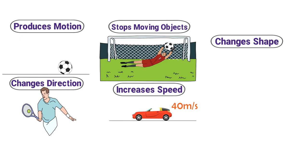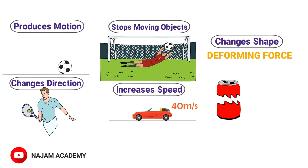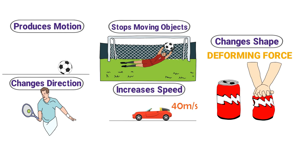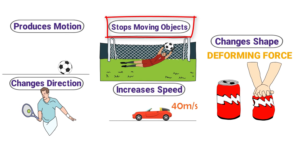Fifthly, force changes the shape of an object, which we also call a deforming force. For example, consider an empty can — you exert force on the can, and due to your force its shape or dimensions change. Such force is also known as a deforming force. To summarize: force produces motion in an object; force stops a moving object; force changes the direction of a moving object; force increases the speed of a moving object; and force changes the shape or dimensions of an object.